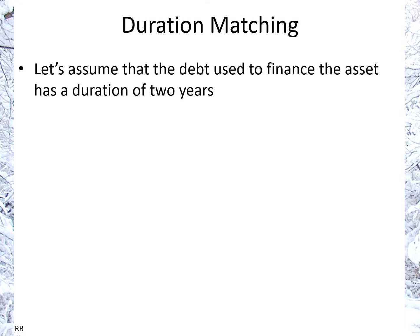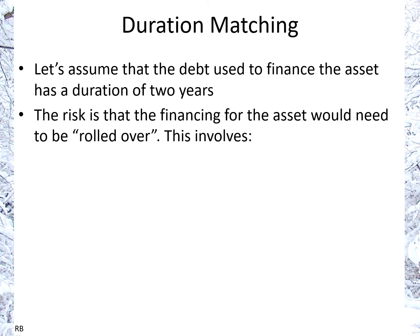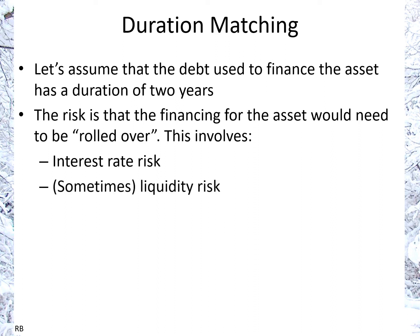Continuing this example: if the debt financing this asset has only two years remaining instead of eight, the risk is that the debt must be rolled over. This creates potential interest rate risk — rates could be different when new debt is issued in two years — and also liquidity risk, meaning the capacity to refinance at all. During financial system stress, such as the recent pandemic, this can become significant even for otherwise solvent companies, with rates shooting up very quickly and central banks needing to respond.